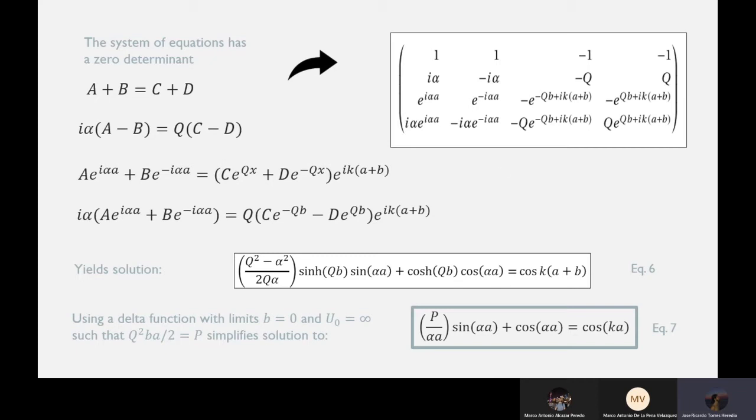And in this limit, q has to be much greater than alpha and qb is going to have to be much smaller than 1. This yields our final solution, equation 7, which we're going to have to call our main equation, since it's what we're going to have to work with.